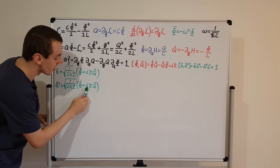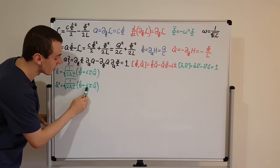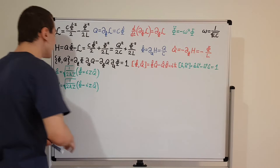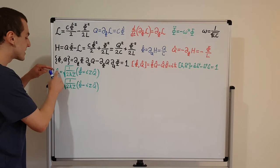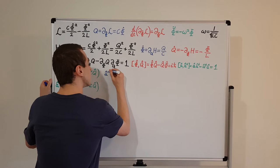The only difference between a and a dagger is the sign of the imaginary number — plus i and minus i. Now what we want to do is write phi and Q in terms of the ladder operators. Let's take the sum of a dagger and a.